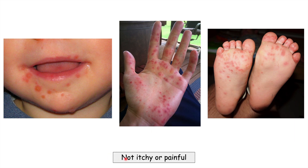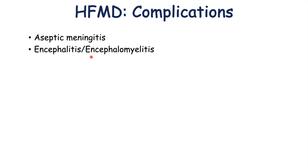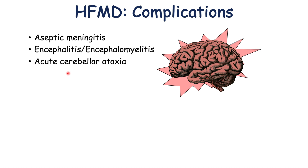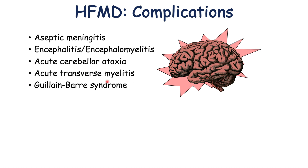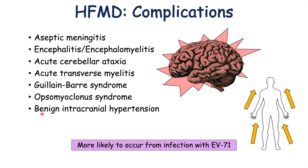It's important to note that this rash is not itchy or painful. The majority of cases of hand, foot, and mouth disease will have those prodromal findings and the rash, and often that's going to be it. But in some cases more severe complications can occur, including aseptic meningitis, encephalitis and encephalomyelitis, acute cerebellar ataxia, acute transverse myelitis, Guillain-Barré syndrome, opsoclonus-myoclonus syndrome, and benign intracranial hypertension. All of these complications are more likely to occur from infection with enterovirus 71.